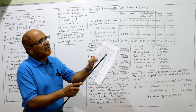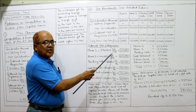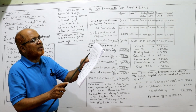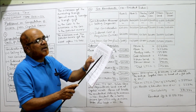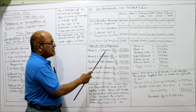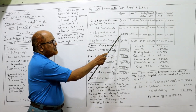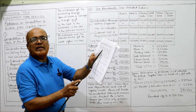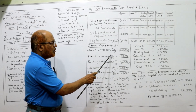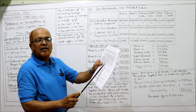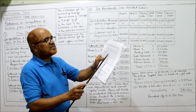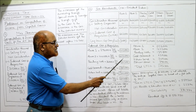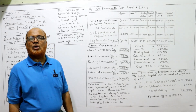Now calculating indexed cost of acquisition for all six assets. House number one: purchase price two lakh ninety-six thousand. Multiply by 301 divided by 148 (index for purchase year 2009-10) — gives six lakh two thousand. House number two: purchase price four lakh forty thousand, purchased in 2013-14, index number 220. Four lakh forty thousand into 301 divided by 220 — gives six lakh two thousand. Painting work: purchase price thirty-six thousand eight hundred; year 2011-12, index number 184. Thirty-six thousand eight hundred into 301 divided by 184 — gives sixty thousand two hundred.